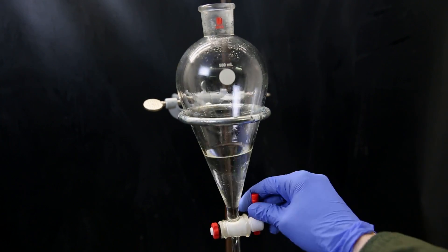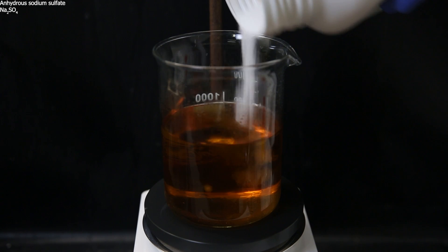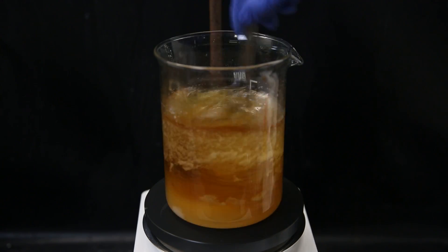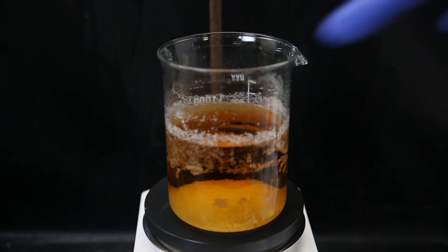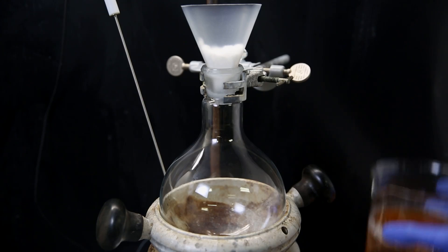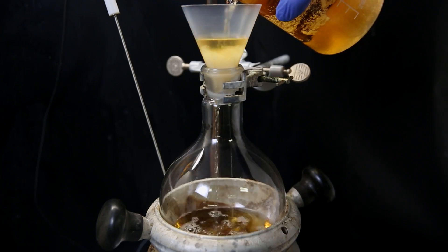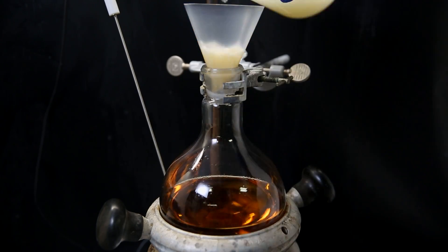Now to the washed DCM layer, I add some anhydrous sodium sulfate, to take up any water droplets that came through. I stir it strongly, because the water droplets are floating on the surface of the DCM. We see the sodium sulfate sticks to the glass, because it has taken up water. I then filter all of it through some cotton, directly into a flask, to remove the sodium sulfate. And I wash the beaker and filter a few times with some fresh DCM.